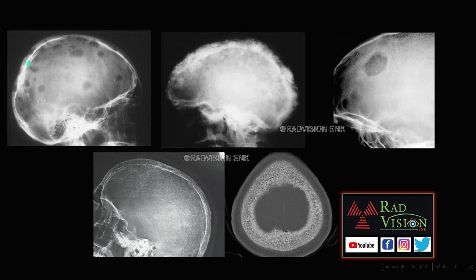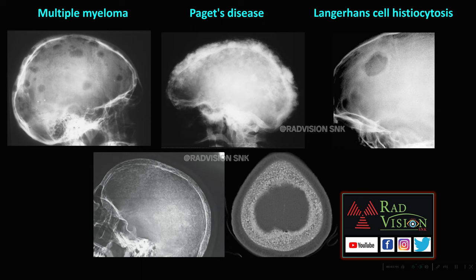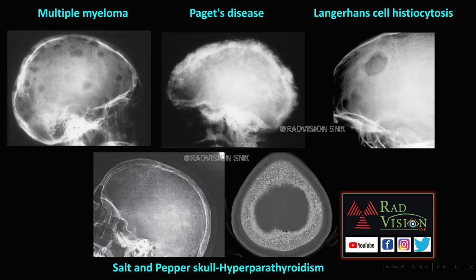Multiple punched-out lytic lesions in the skull are seen in multiple myeloma. Multiple sclerotic foci scattered in the skull with bony expansion and remodeling are seen in Paget's disease. A single well-defined lytic lesion in the skull in a child — suspect Langerhans cell histiocytosis. Multiple thin lucencies in the calvarium is the salt and pepper skull, due to resorption of trabecular bone, classically seen in hyperparathyroidism.